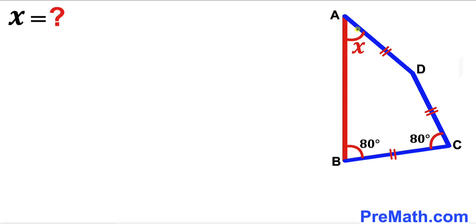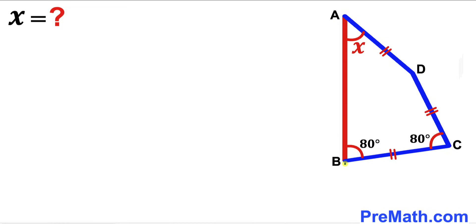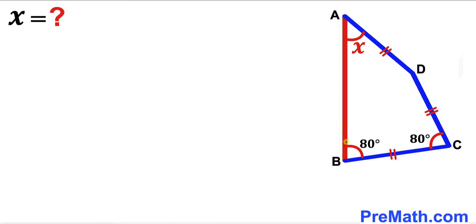Welcome to Pre-Math. In this video we have quadrilateral ABCD such that side BC equals side CD and also equals side AD. Moreover, angle ABC is 80 degrees and angle BCD is 80 degrees as well. Furthermore, angle BAD is represented by x degrees, and our task is to calculate this angle x.